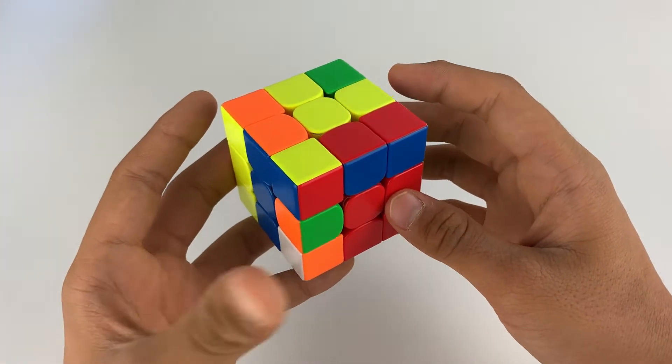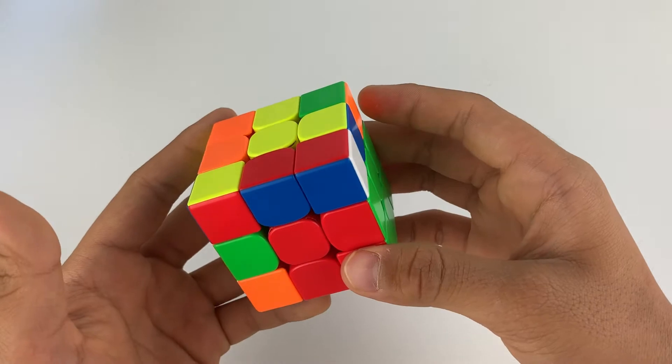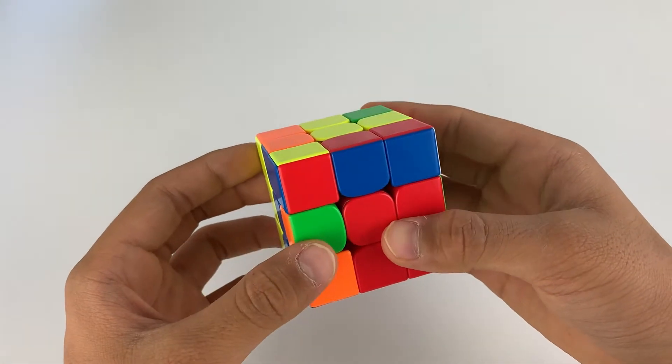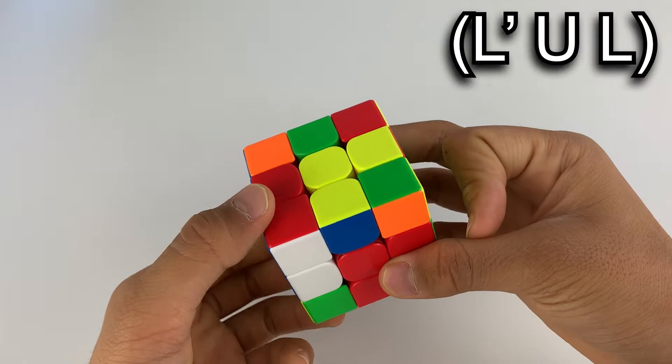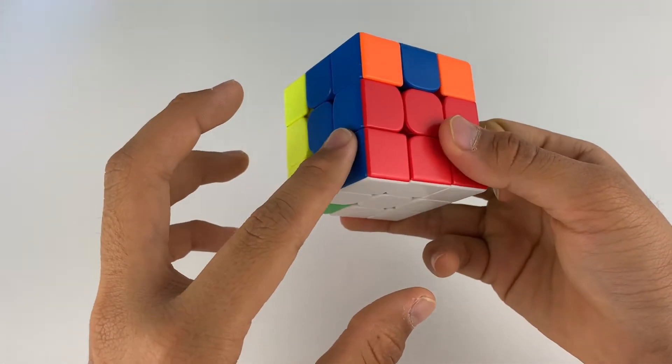However, if you did the first step and match the top with the front, but the white sticker is on the right side, you can do this algorithm: L prime, U, L, and that should preserve the pair.